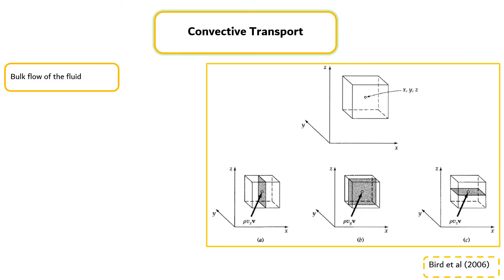Momentum can also be transported by the bulk flow of the fluid, and this process is called convective transport. Let's consider a cube-shaped region in space through which the fluid is flowing, as shown in the figure. At the center of the cube, the fluid velocity vector is v.